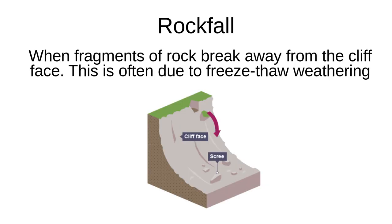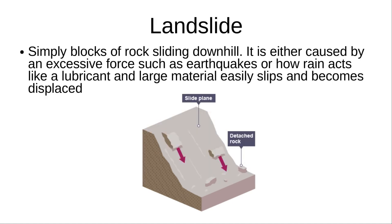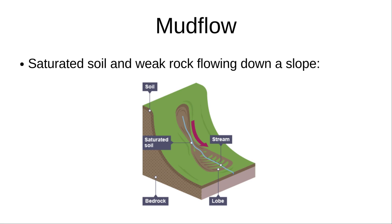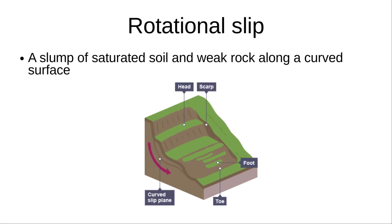Rockfall is when fragments of rock break away from the cliff face, often due to freeze-thaw weathering. Landslide: blocks of rock sliding downhill. Mudflow: saturated soil and weak rock flowing down a slope. Rotational slip: a slump of saturated soil and weak rock along a curved surface.